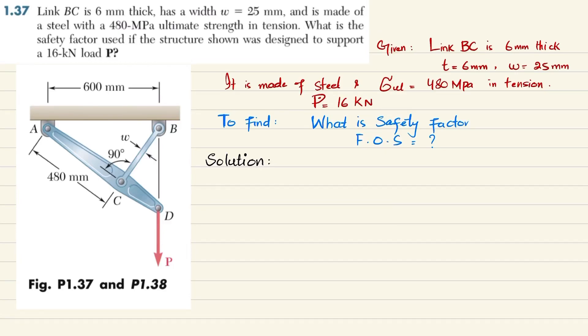Welcome back to problem 1.37. The statement is: Link BC is 6 millimeter thick and has width 25 millimeter, made of steel with 480 megapascal ultimate strength in tension. What is the factor of safety used if the structure shown was designed to support a 16 kilonewton load P?